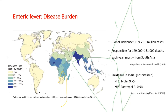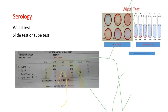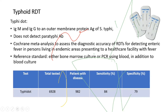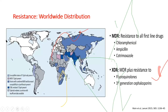The disease burden of enteric fever is very high in our country since it is an endemic zone, with quite high mortality. Diagnosis includes blood culture (gold standard in the first week), serology — Widal and typhidot in the second week, stool culture in the third week, and urine culture in the fourth week. Widal titer more than 160 is considered significant. Typhidot RDT has sensitivity of around 84% and specificity of 79%. TrueNAT Salmonella chip detection PCR is available. Importantly, resistance of salmonella is rising, with challenges of extensively drug-resistant salmonella now emerging.